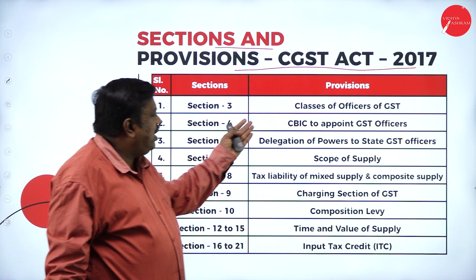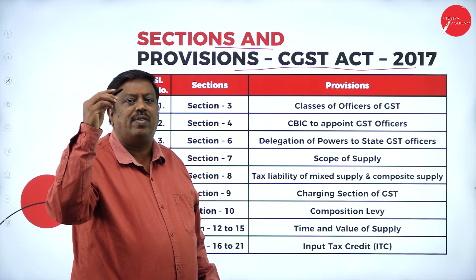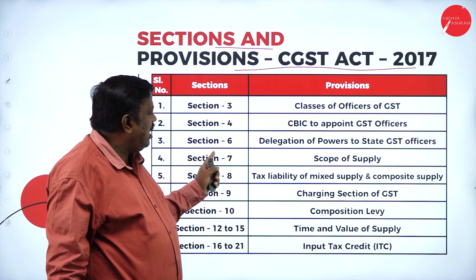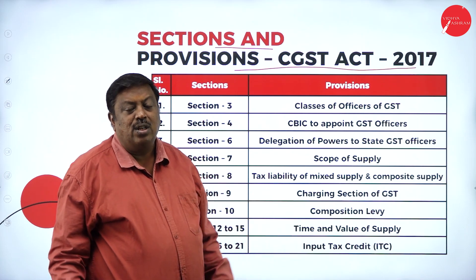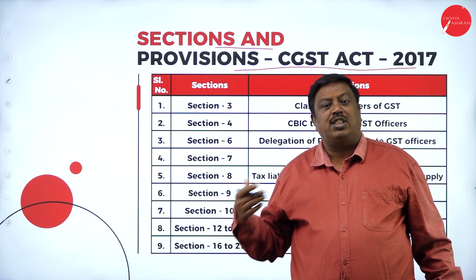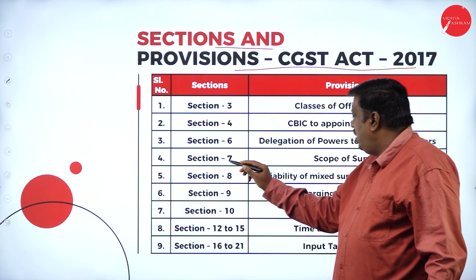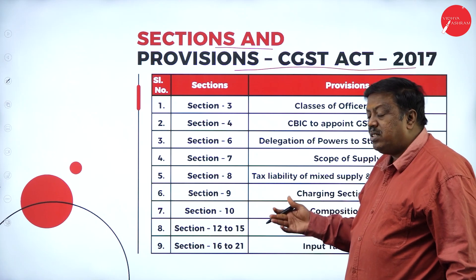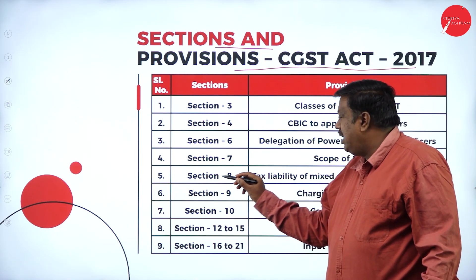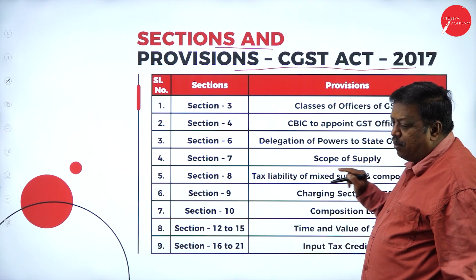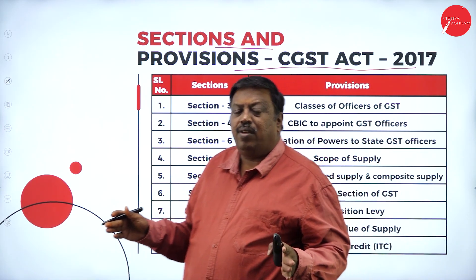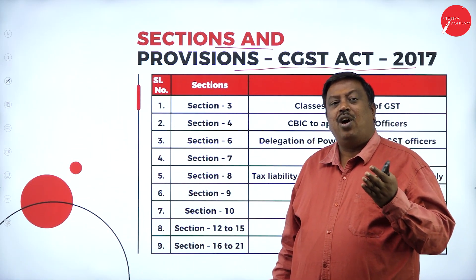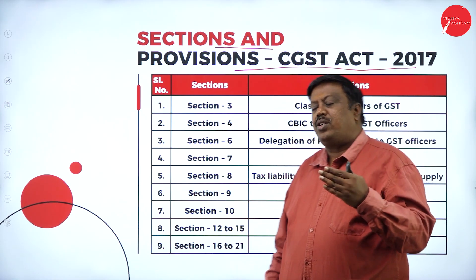The major sections of the CGST Act 2017 are as follows: Section 3 deals with classes of officers of GST; Section 4 covers the CBIC appointment of GST officers; Section 6 covers delegation of powers to state GST officers; Section 7 covers the scope of supply — what is supplied, time of supply, and place of supply; and Section 8 deals with the tax liability of mixed supply and composite supply, where certain components may or may not be divisible.